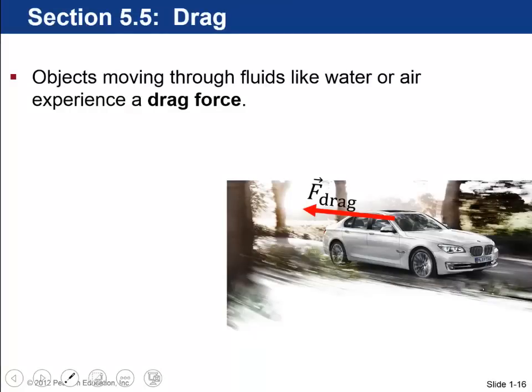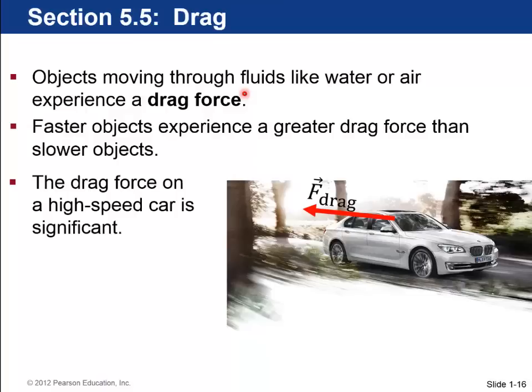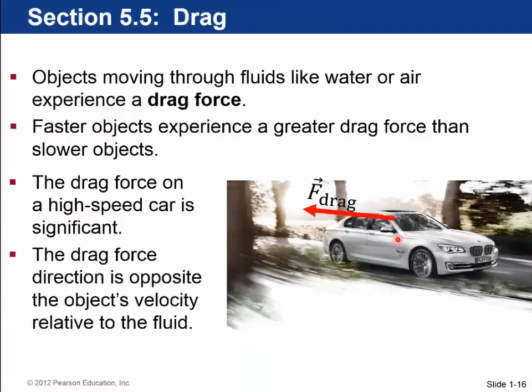Okay. Last section is drag. So this is sometimes called air resistance. The basic idea is objects moving through fluids like water or air experience a drag force. Faster objects experience a greater drag force. So if you have this fast BMW going towards the right here, there's a significant drag force pointing towards the left. And that depends on the size of the car and the shape of the car and, of course, also the speed. And the direction is always opposite of the relative velocity of the object through the fluid.